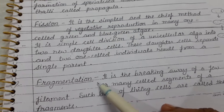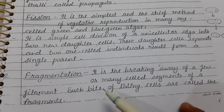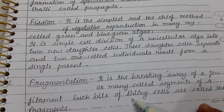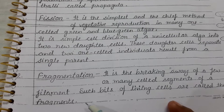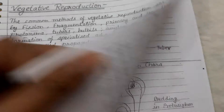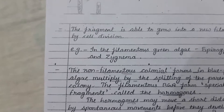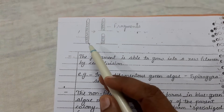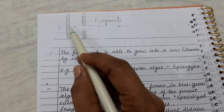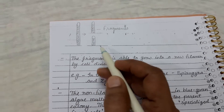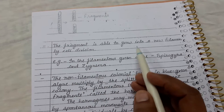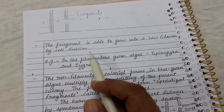Next is fragmentation. It is the breaking away of a few or many cell segments of a filament. Such fragments or bits of living cells are called the fragments. It is a commonly seen separation of fragments from the main part. As you can see in this diagram, it's a parental alga that separates and forms new fragmented cells of alga. The fragment is able to grow into a new filament by cell division.